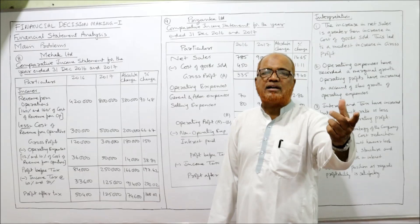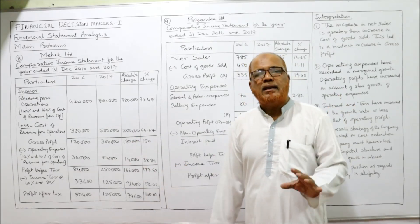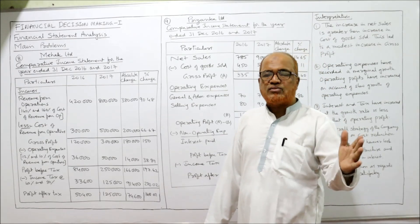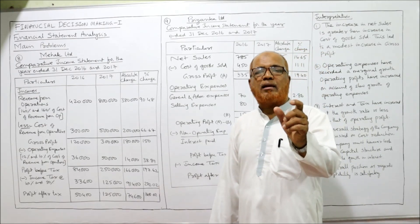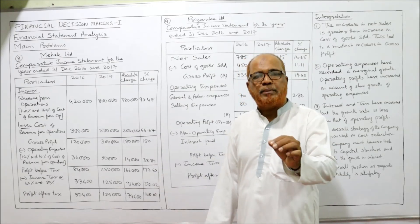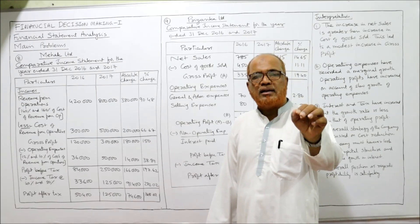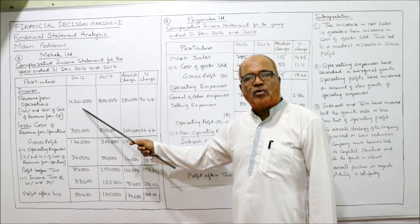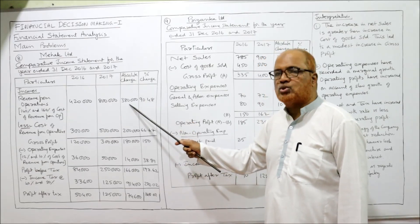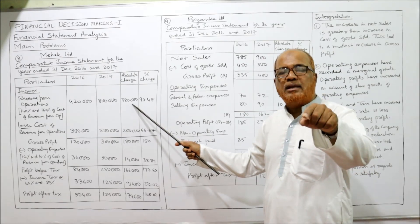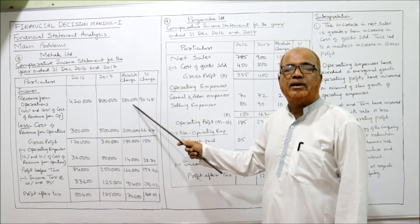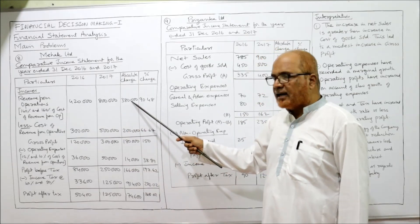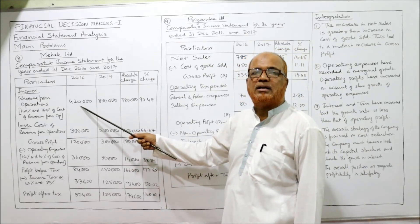Now we calculate the changes. Absolute change equals current year value minus last year value. For revenue from operations: 8 lakh minus 4,80,000 = 3,80,000. Percentage change equals absolute change divided by last year figure multiplied by 100. So 3,80,000 divided by 4,80,000 into 100 = 90.48%.